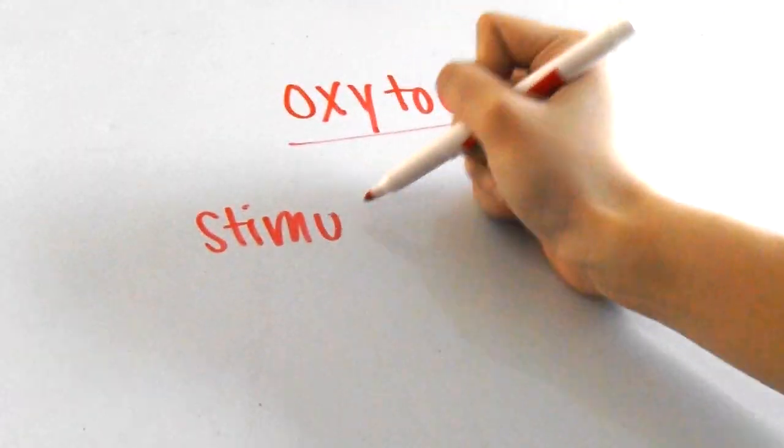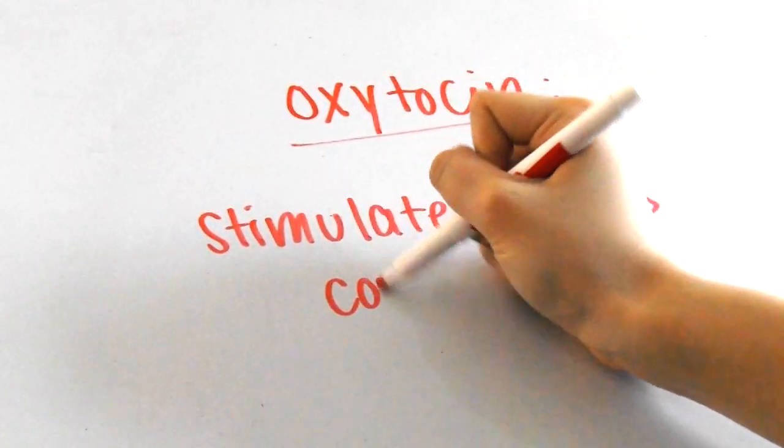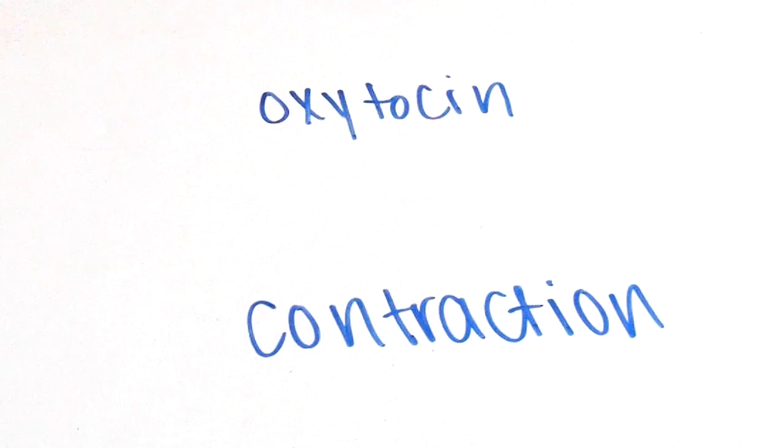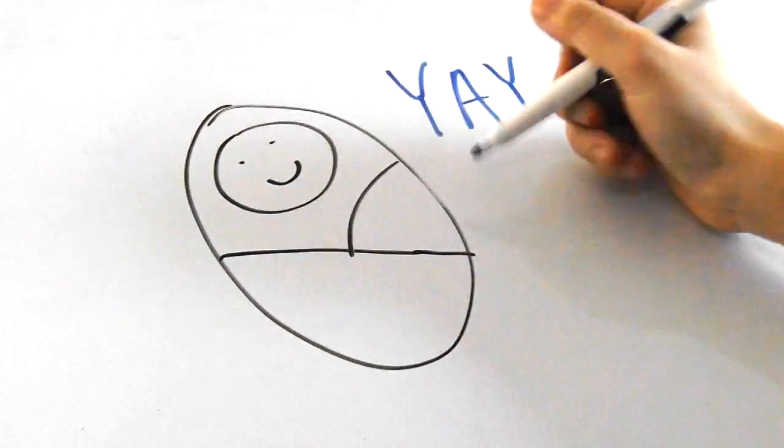A very common example of positive feedback is when mothers produce oxytocin during childbirth. Oxytocin is actually a hormone that stimulates uterine contractions, helping the baby move. The mother's body produces more and more oxytocin, allowing the uterine to contract more and more until the baby is finally born.